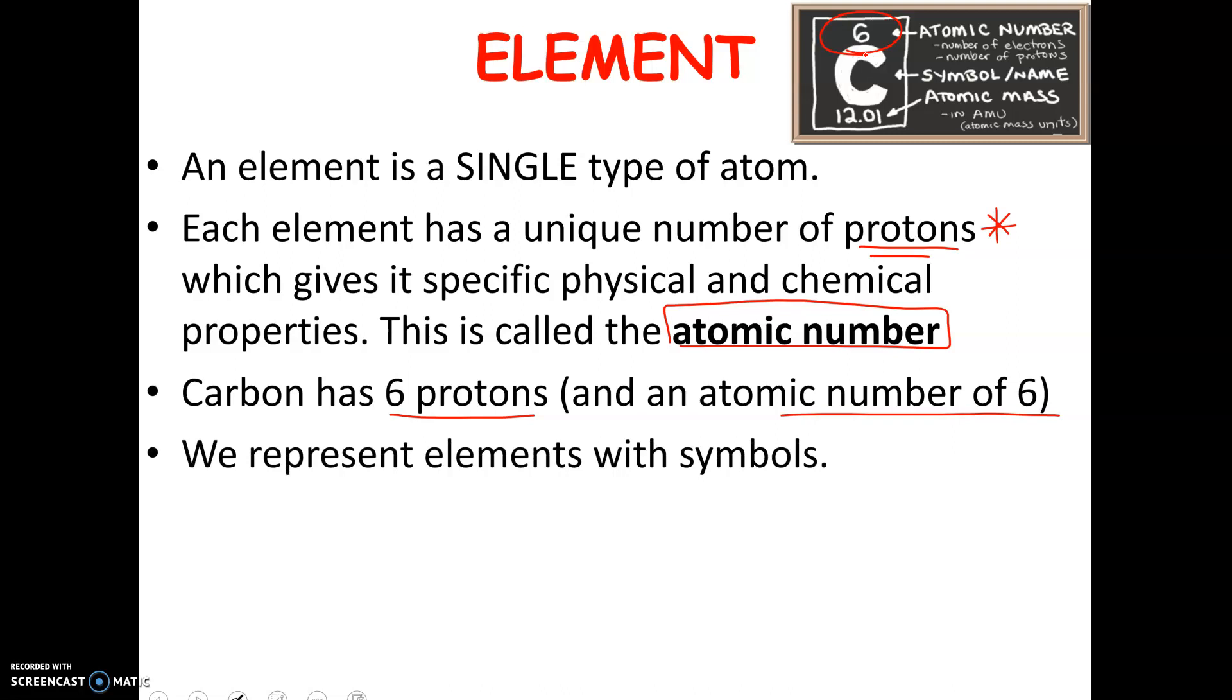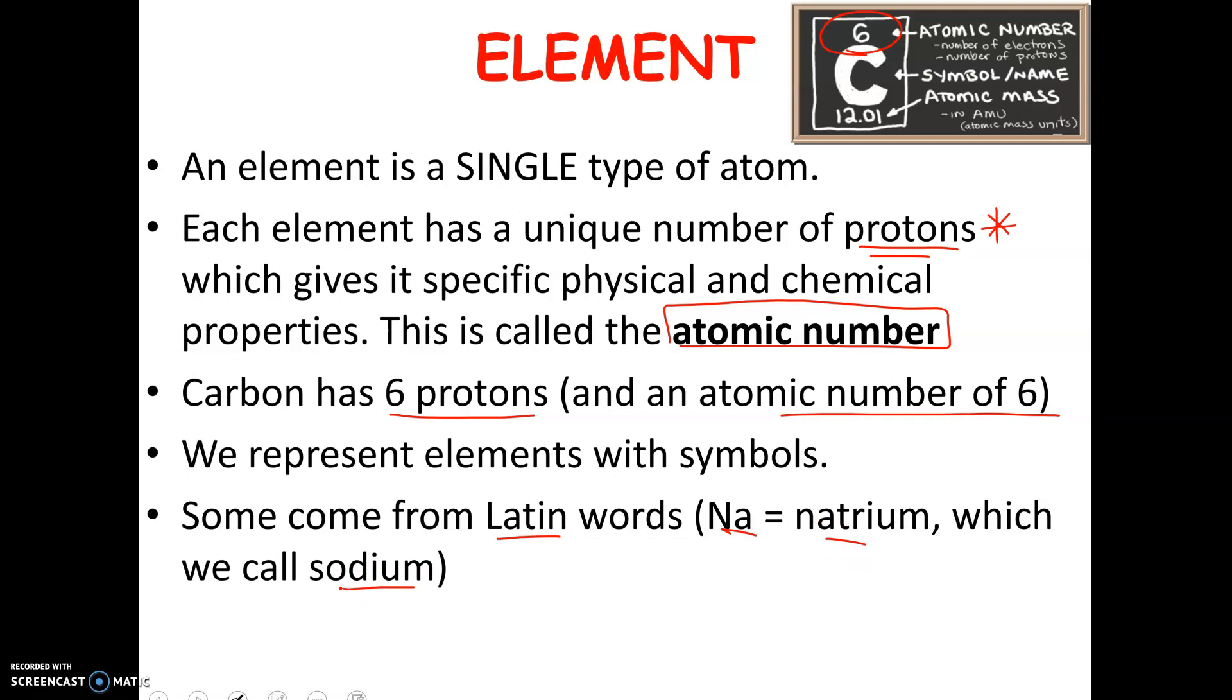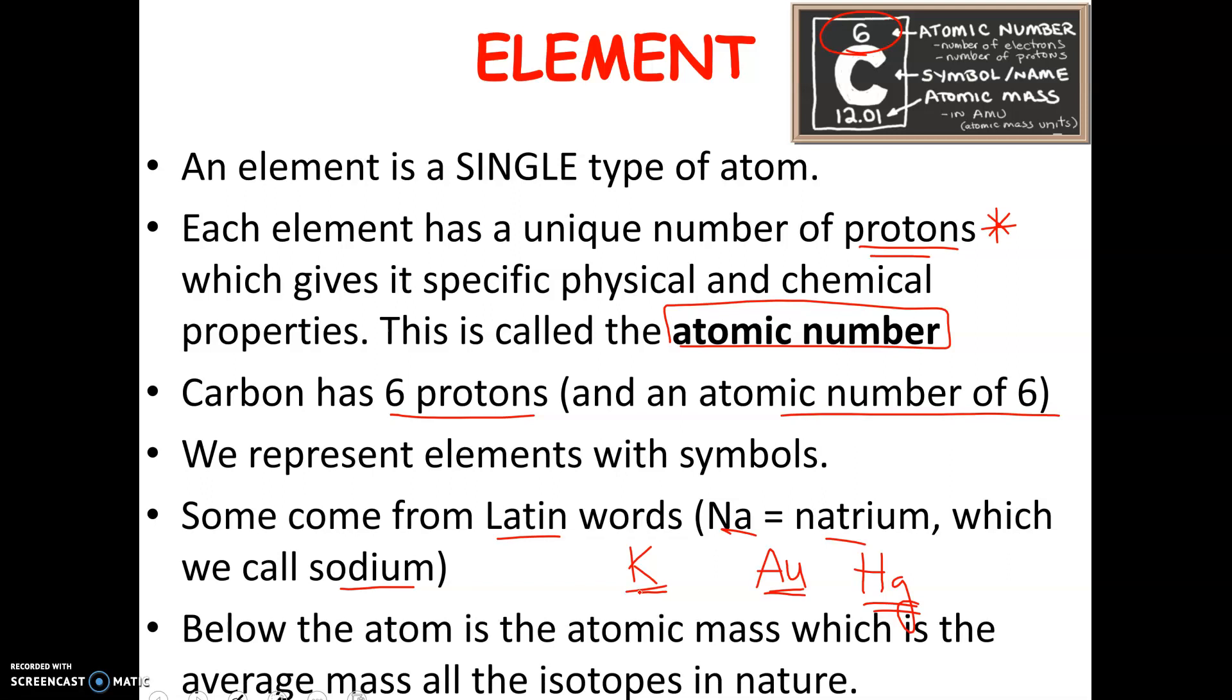We represent the elements with symbols. Some of them are really easy to remember - carbon is C and hydrogen is H. Some of them though come from Latin words, so the symbols are not as obvious to us. Like Na stands for natrium, which is basically sodium. Potassium is K, gold is Au, mercury is Hg. So some of our elements, the symbols don't seem to match, but it's because they're coming from the original Latin words for those elements. Below the atom is what's called the atomic mass. See how this is 12.01? This is the average mass of all the different isotopes in nature.